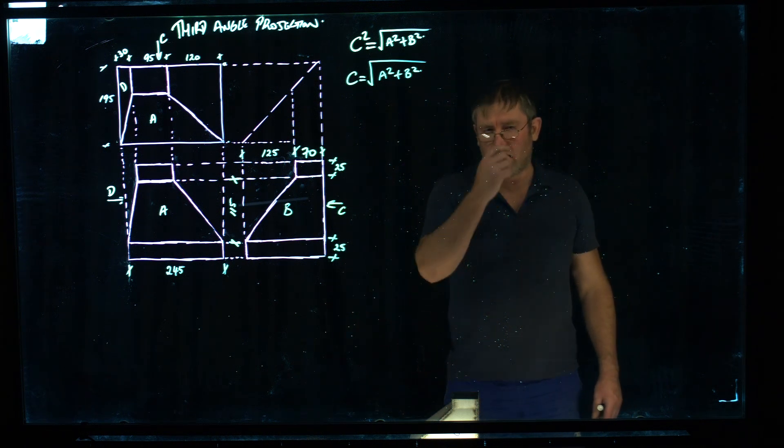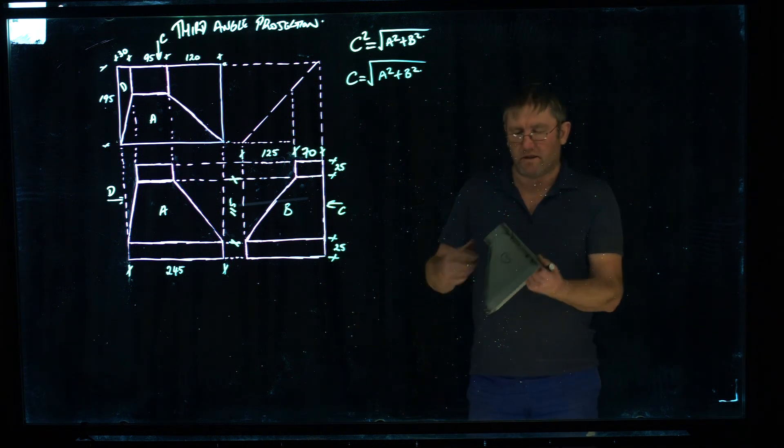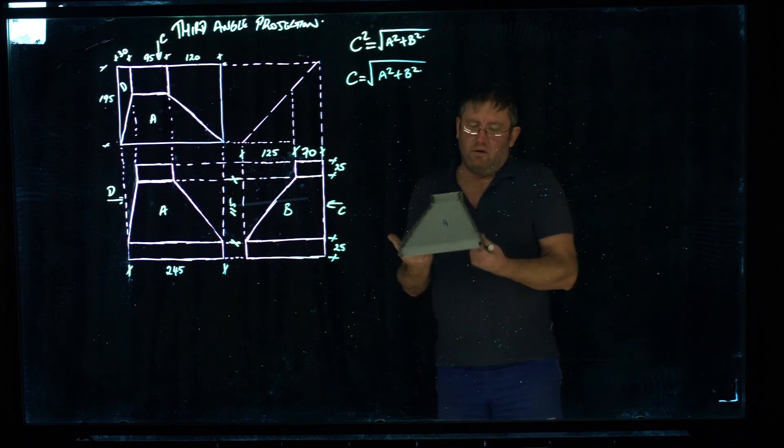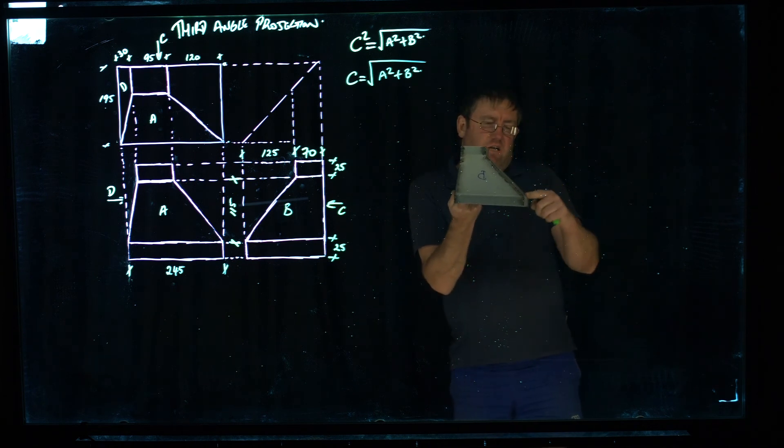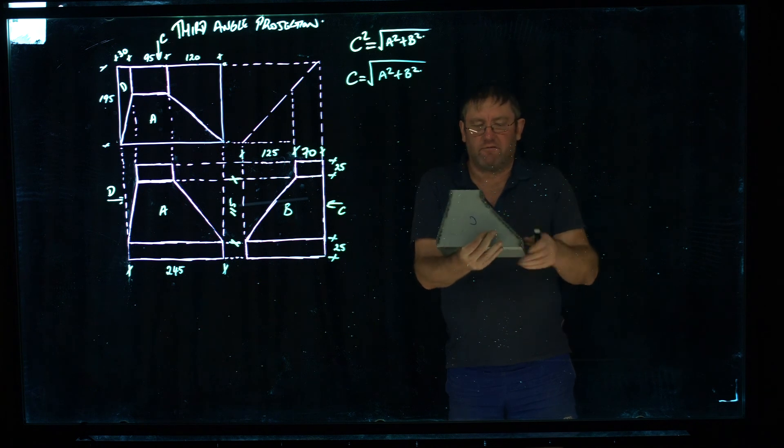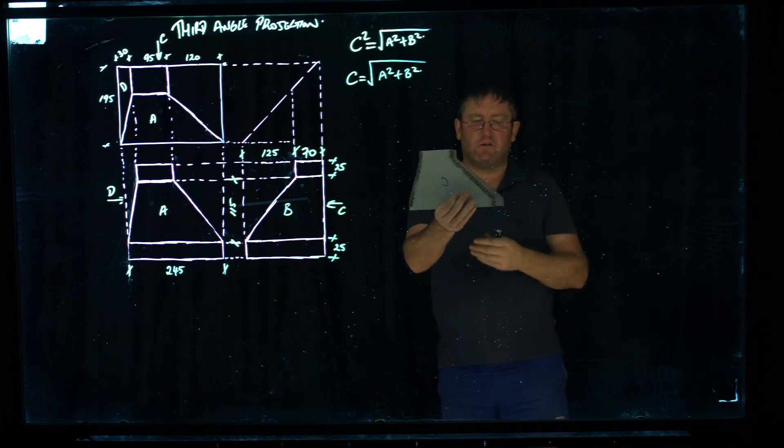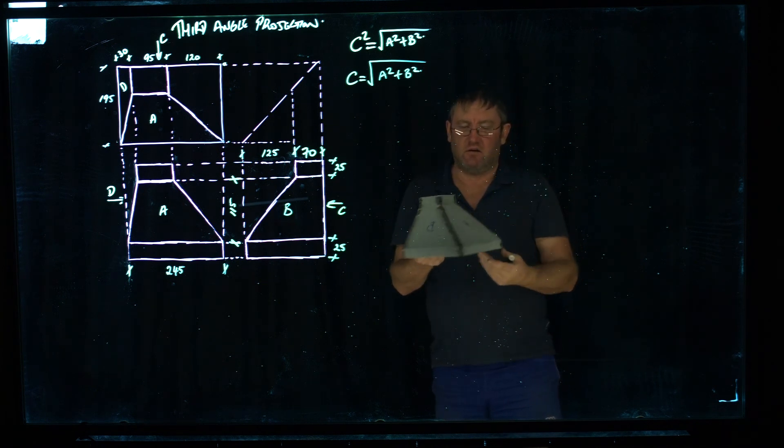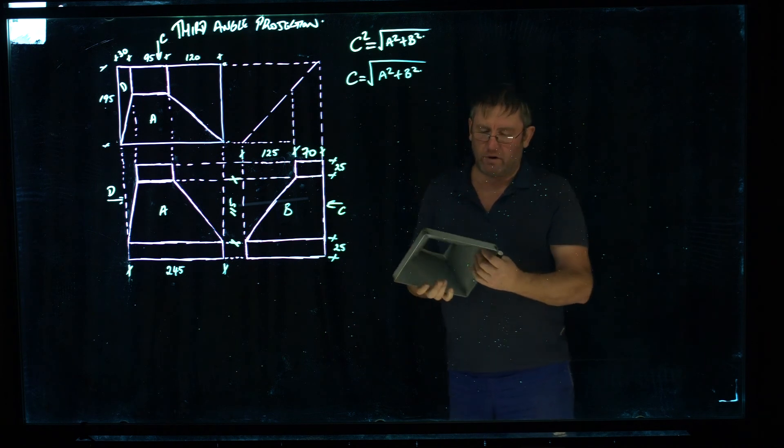Right, so this video is based around this transition here. How to work out the true lengths of a transition on all the different faces so that you can step over to the guillotine and cut the sheet out without having to draw it out graphically.